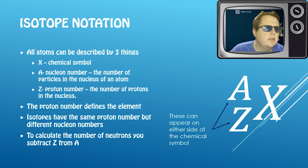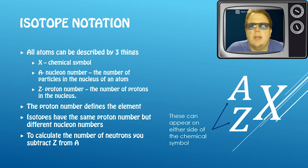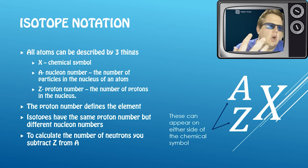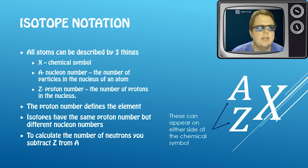Okay, so isotope notation. You'll be used to writing this down in chemistry already. This is our way of representing all atoms by three things: X being their chemical symbol, A being their nucleon number, which is the number of particles in the nucleus of an atom. Now if you study this in chemistry, this is also known as the relative atomic mass.